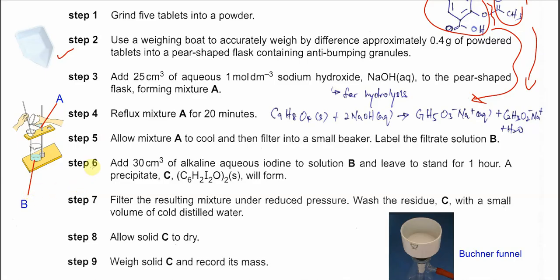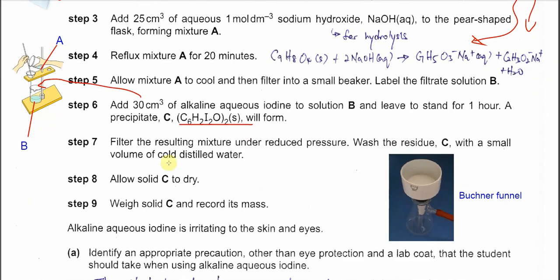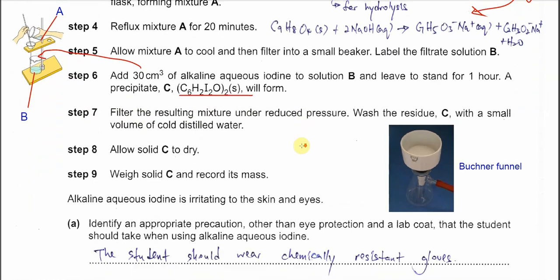Add 30 cm³ of alkaline aqueous iodine to solution B and let it stand for one hour, and the precipitate C will form. After that, step 7, filter the resulting mixture under reduced pressure. Wash the residue with a small volume of cold distilled water.